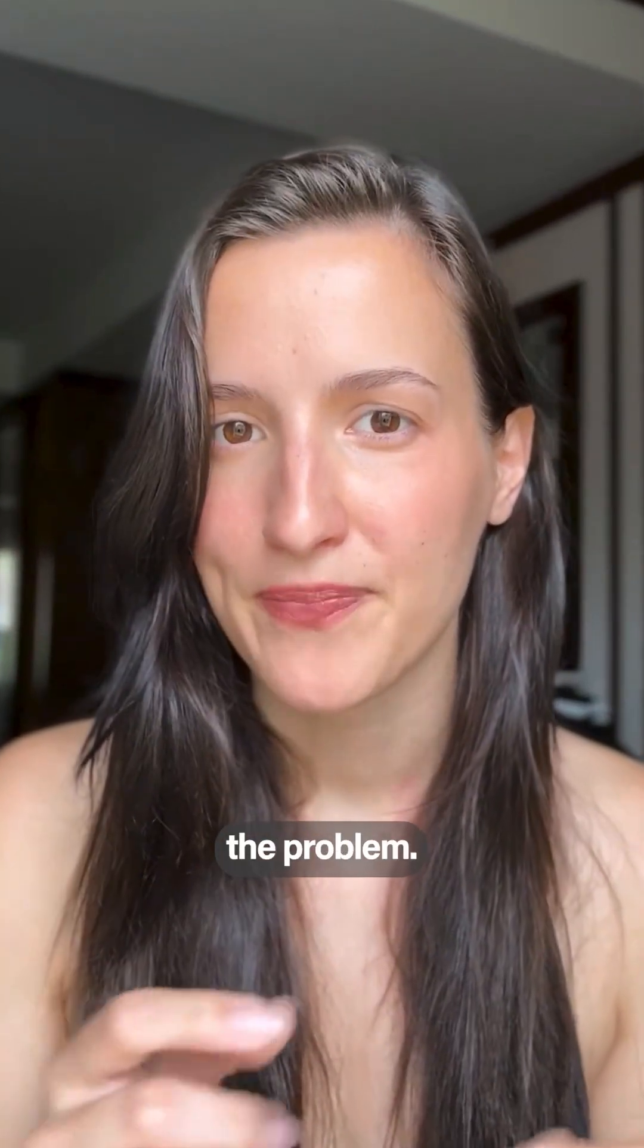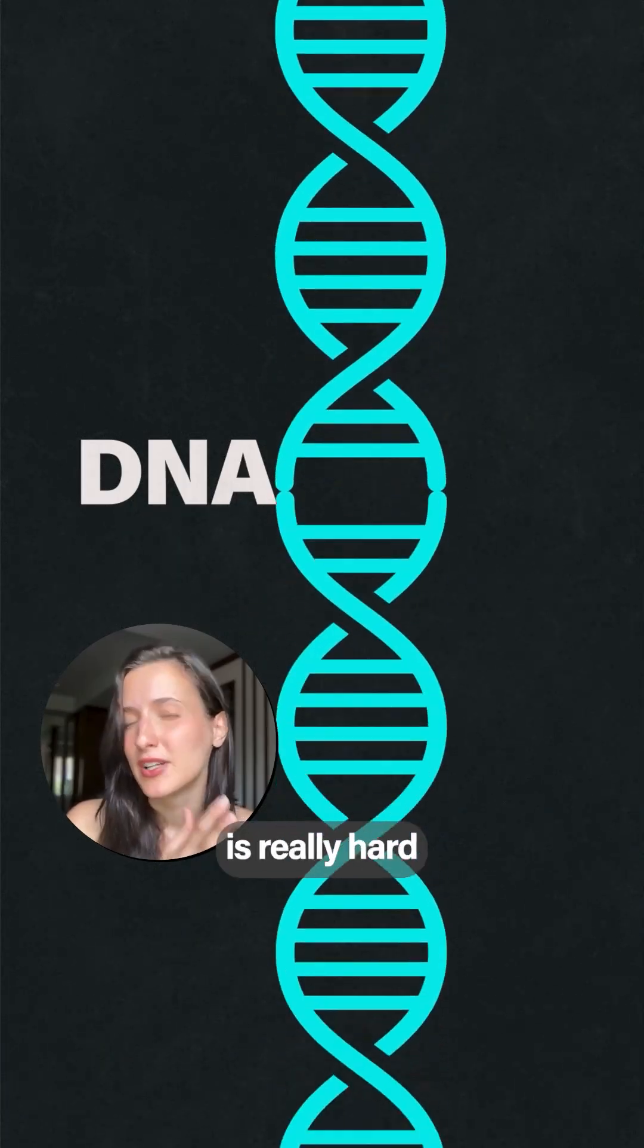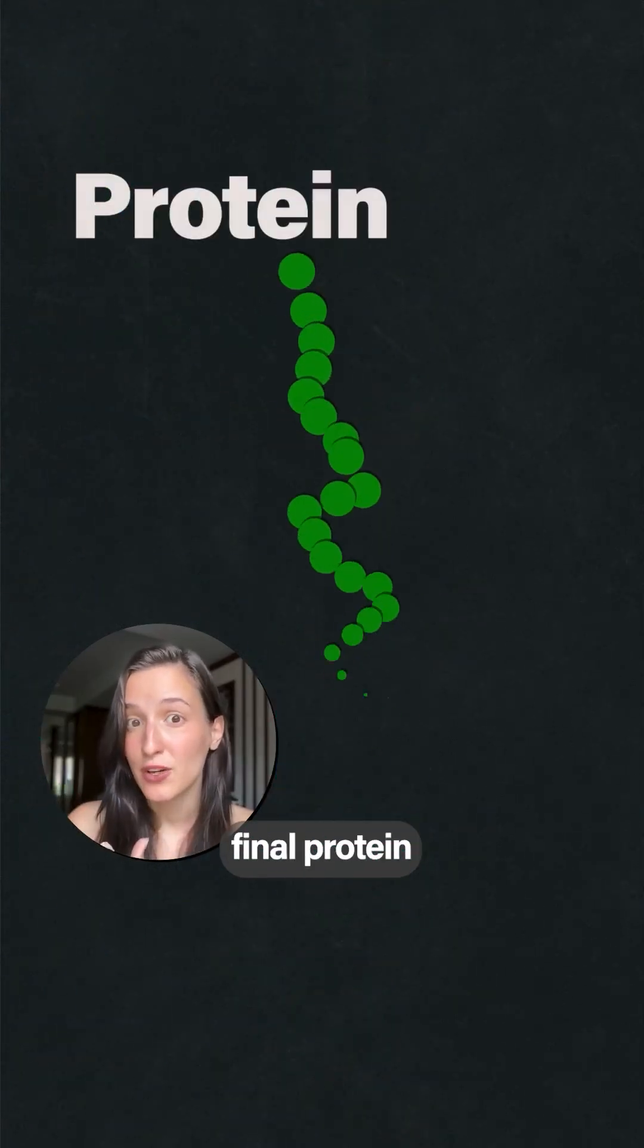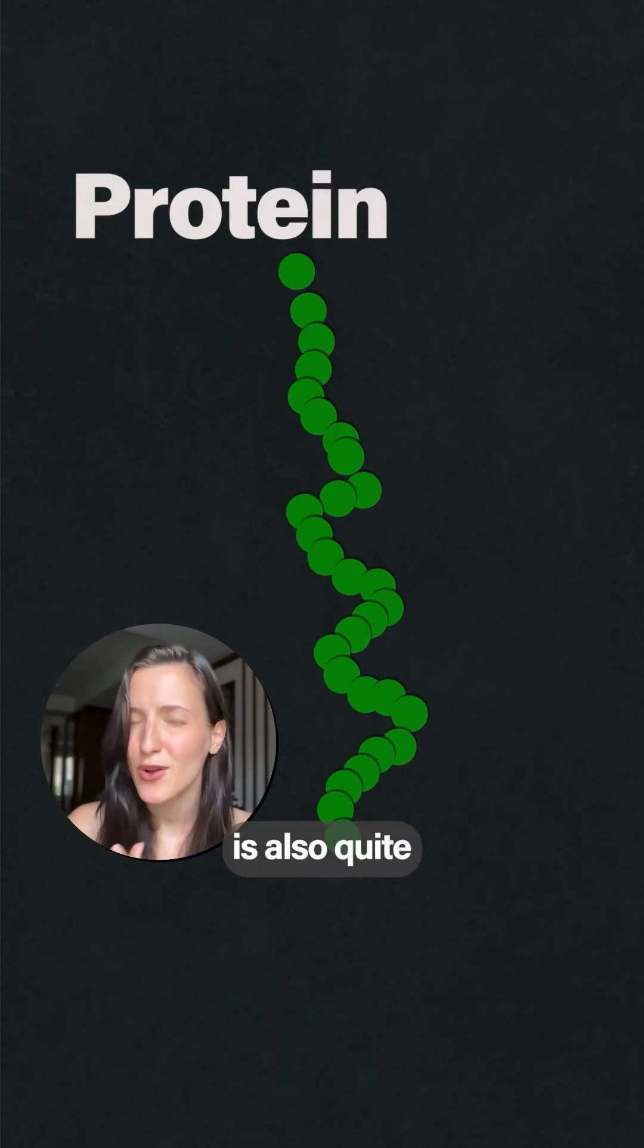So how did scientists for the first time create a therapy for Huntington's? Well, they thought there is the problem. DNA, or the cookbook, is really hard to change. And the final protein, or the final dish, is also quite hard to fix.